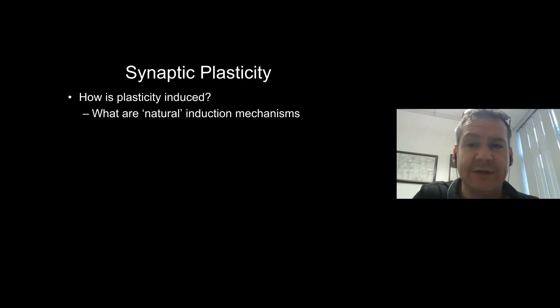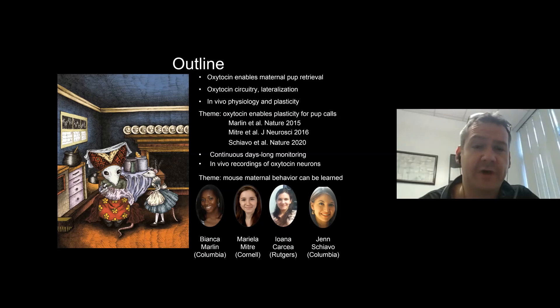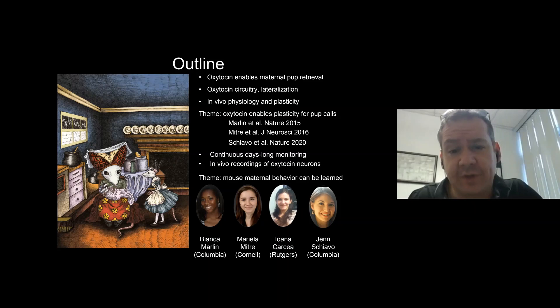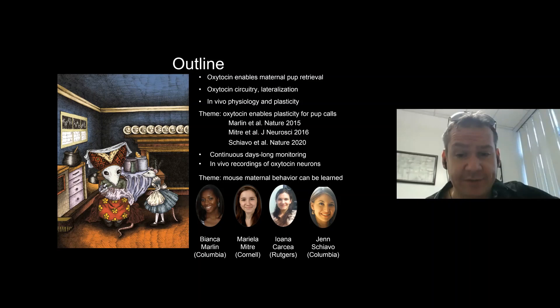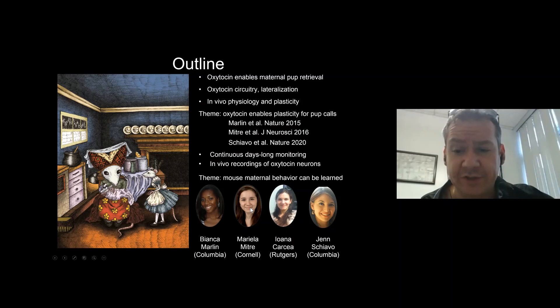Here's a brief outline of my talk. The first two-thirds or so will be published work largely by three graduate students, talking about how oxytocin helps turn on a form of mouse maternal behavior — pup retrieval. I'll talk about our efforts on the oxytocin circuitry of the mouse brain and responses to pup call sounds. This is the work of graduate students Bianca Marlin, now opening her own lab at Columbia; Mariela Mitra, now in residency at Cornell Medical; and Jen Schiavo, starting a postdoc at Columbia.